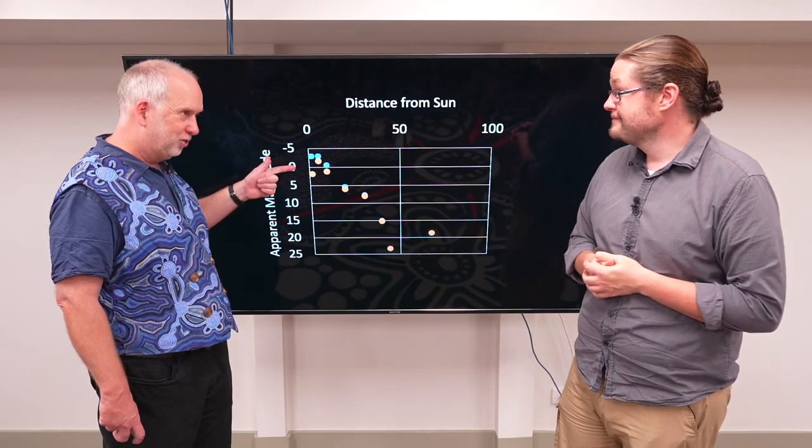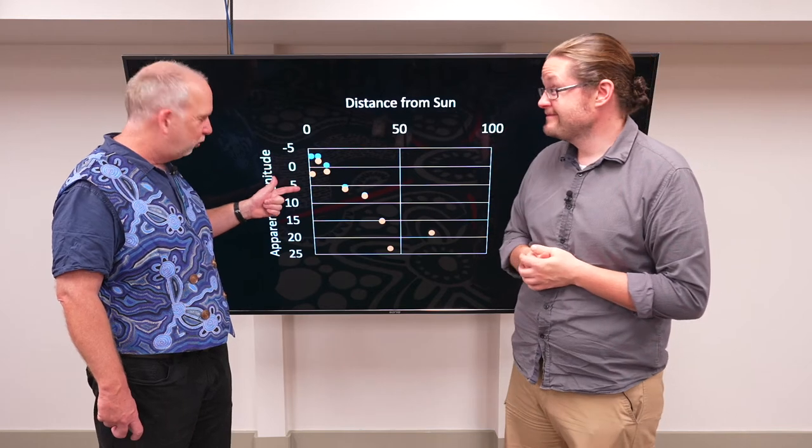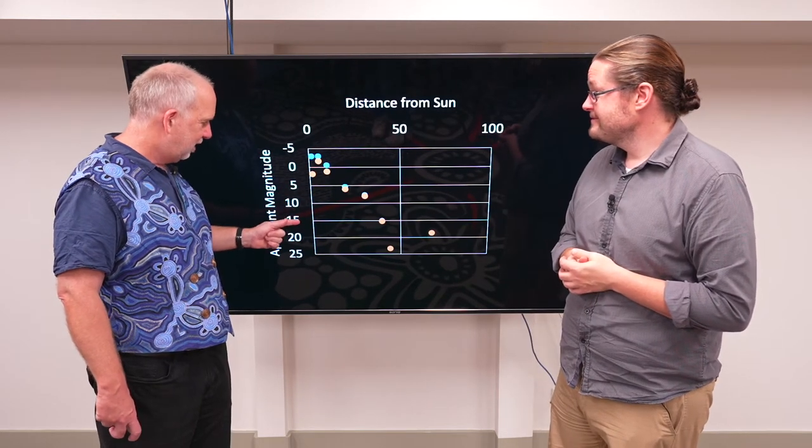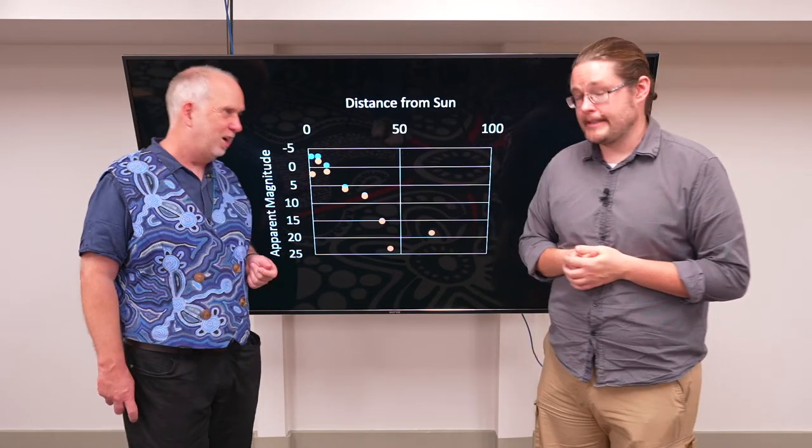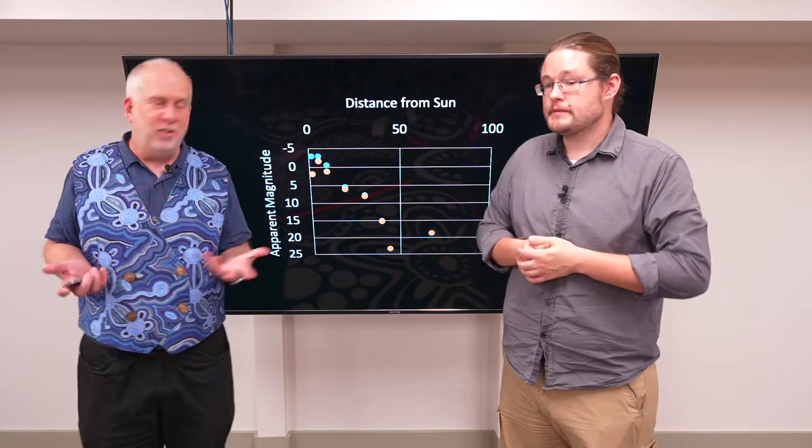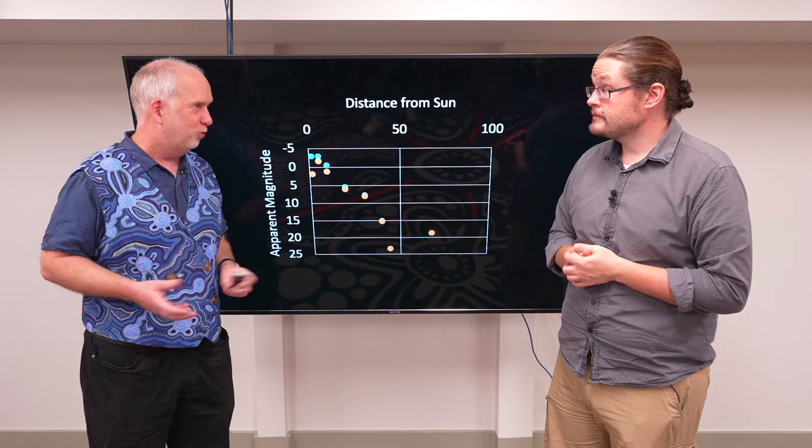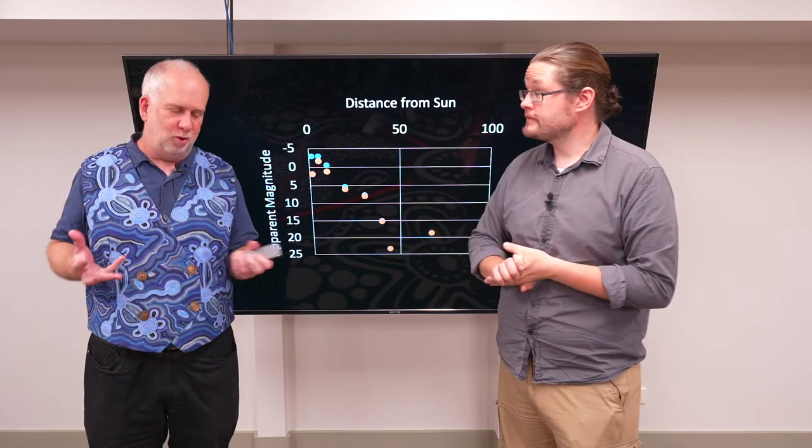Remember, zero is the brightest stars in the sky. Fifth magnitude is the faintest thing you can see with the human eye. So that's 100 times fainter than the human eye, 10,000 and so on. We're now talking about things that are millions of times fainter than the human eye.